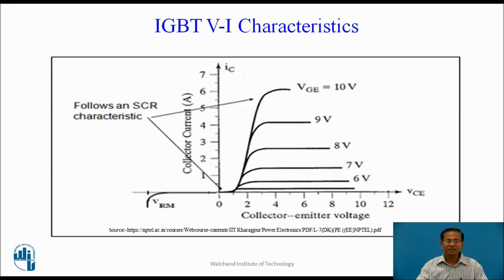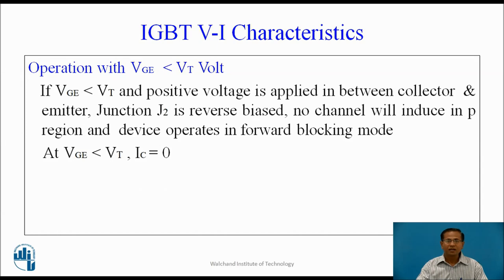IGBT VI characteristics show the relation between collector voltage and collector current. In forward blocking mode, VGE is less than threshold voltage. Junction J2 is reverse biased while junctions J1 and J3 are forward biased. No channel is induced in the P region, so the device operates in forward blocking mode and collector current is zero.